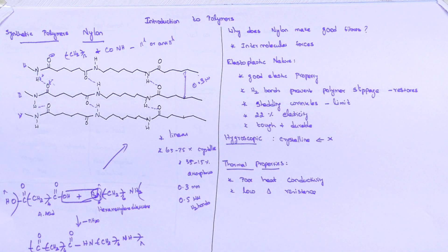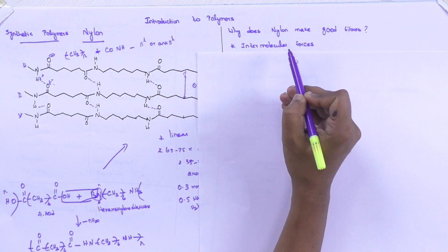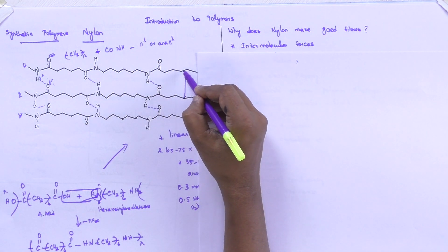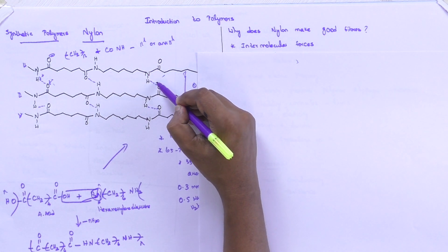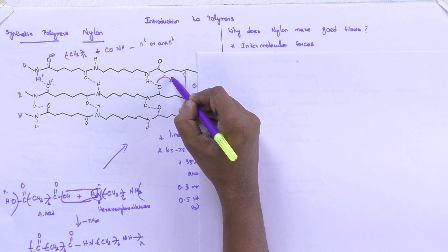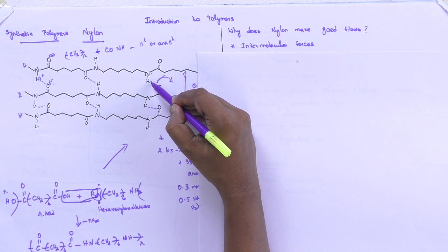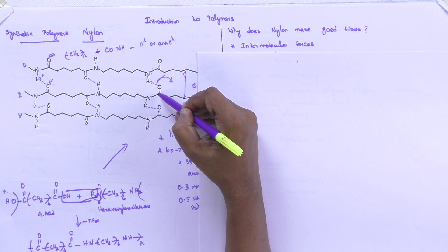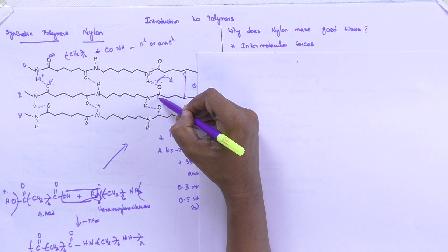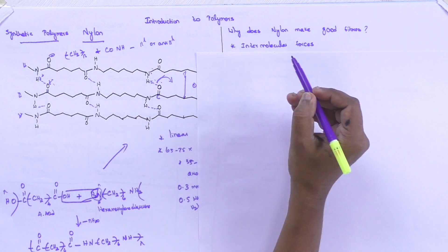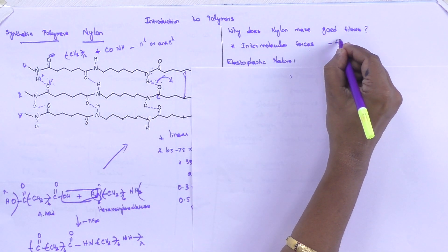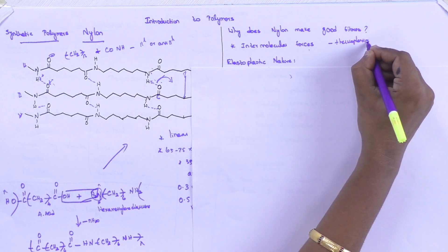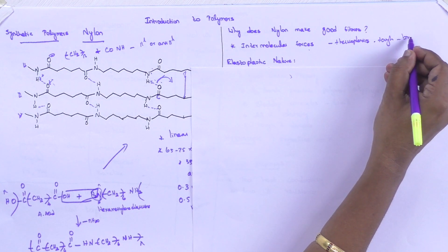Why does nylon make a good fiber? Nylon makes a good fiber due to the intermolecular forces. You can see the covalent bond formed here and the stable hydrogen bond present. The most important force in nylon is hydrogen bonding — the nitrogen bonded to a hydrogen atom of one nylon chain forms a hydrogen bond with the C=O of the other polymer chain. Due to these intermolecular forces, nylon acts as a good fiber with good strength. Mostly they form thermoplastics, which are very tough. Nylon is used in the bristles of your toothbrush.